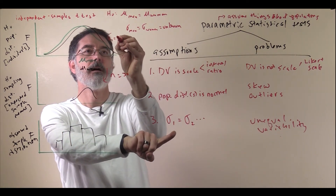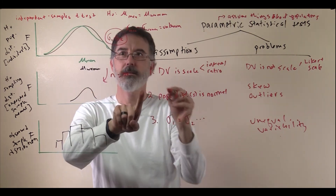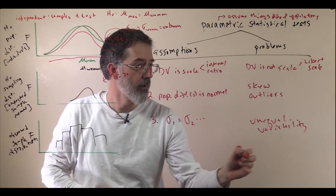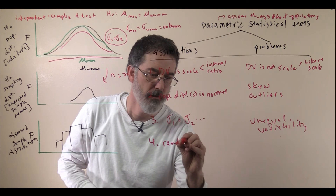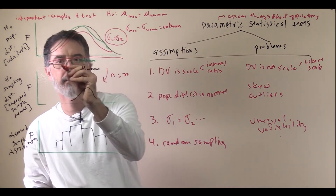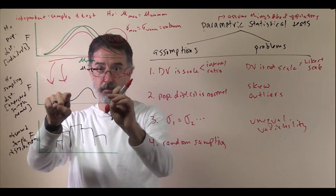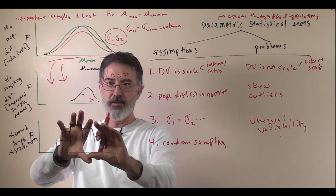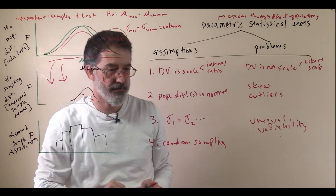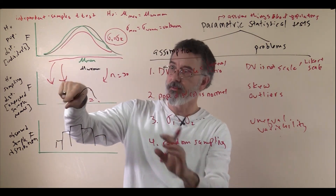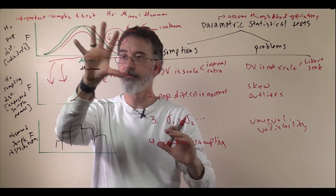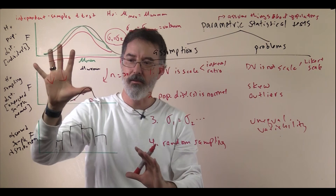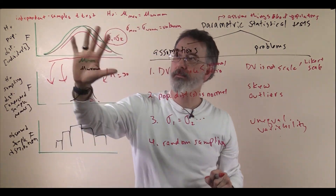So, normal distribution and scale measurement are both assumptions at the population level. The last assumption we will talk about is random sampling. This is the assumption that corresponds to getting our samples from the population — we assume our observed sample is one drawn from this population, and we want to figure out how likely our observed sample is from this population. You can see all of these assumptions reflected in the math behind the statistical tests — the stuff that SPSS is doing for you under the hood.